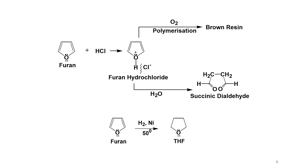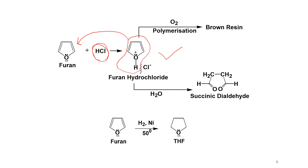Since furan behaves as a base, when it reacts with a strong acid it is converted to its corresponding salt — for example, furan reacting with hydrochloric acid produces furan hydrochloride. We should avoid strong acids with furan. When a strong acid is used, the protonated furan acts as an electrophile and attacks another intact furan molecule, causing chain elongation.